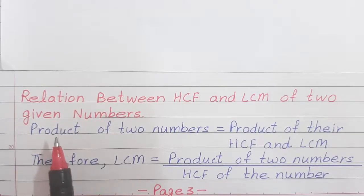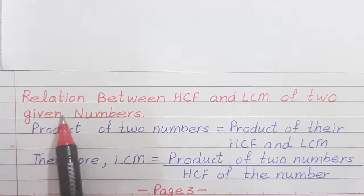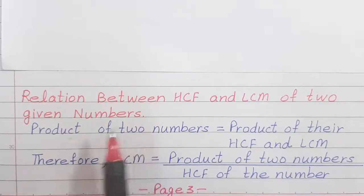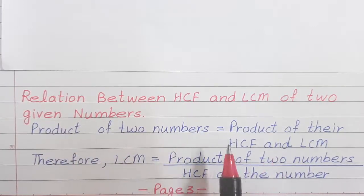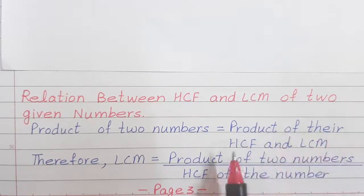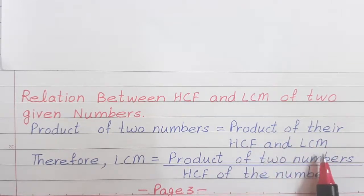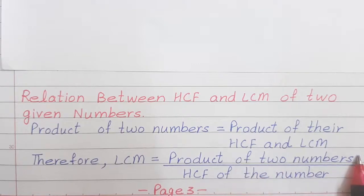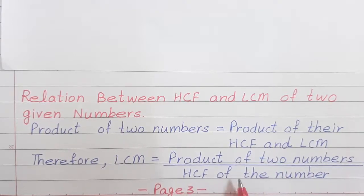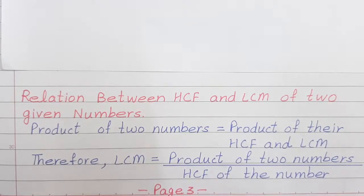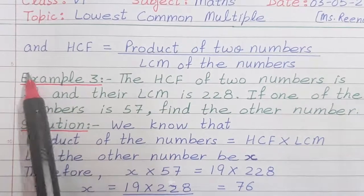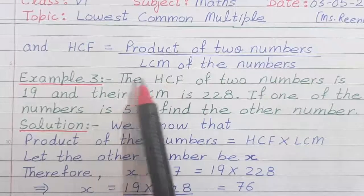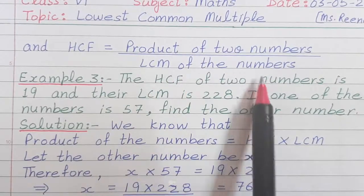Break is over, children. Now, let us discuss about relation between HCF and LCM of 2 given numbers. Therefore, LCM is equal to product of 2 numbers divided by HCF of 2 numbers. Similarly, HCF is equal to product of 2 numbers upon LCM of the numbers.